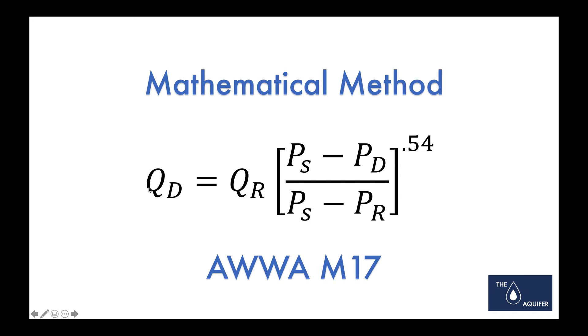And so you could figure out your desired flow based on your residual flow and your static pressures, your desired pressure. Like if you wanted 65 for the flow, 65 PSI, what flow does that correspond to? You'd put that there and then this would be your residual pressure here.